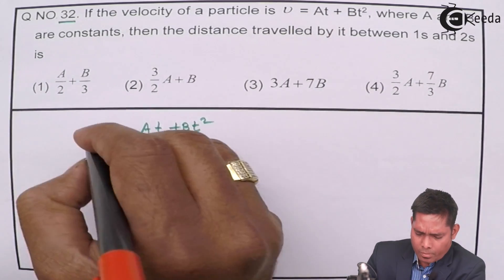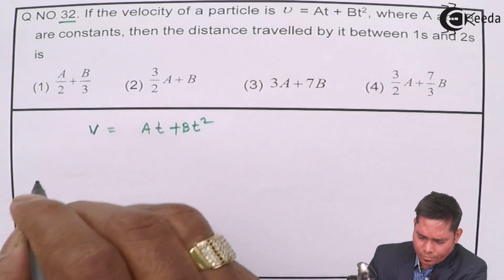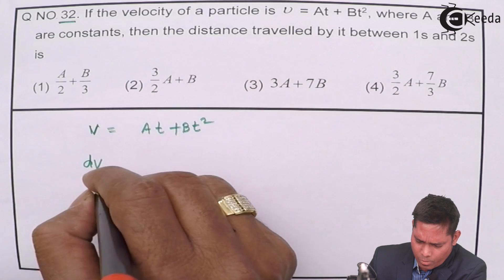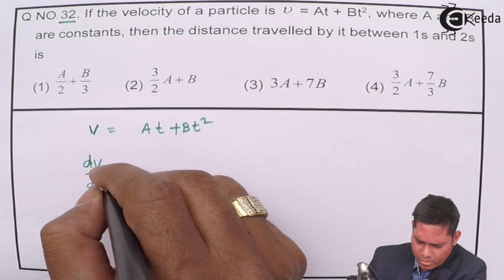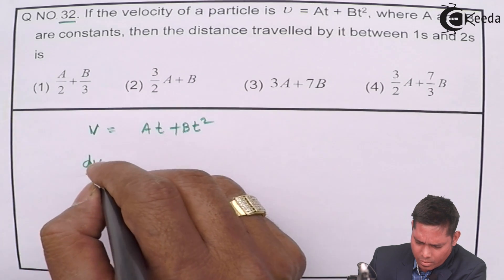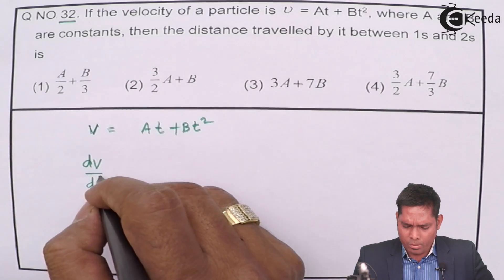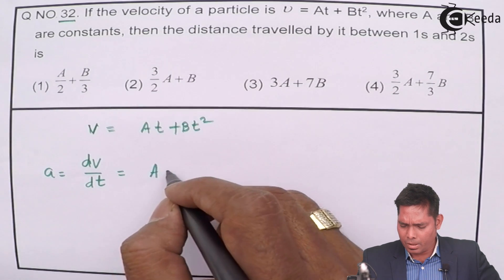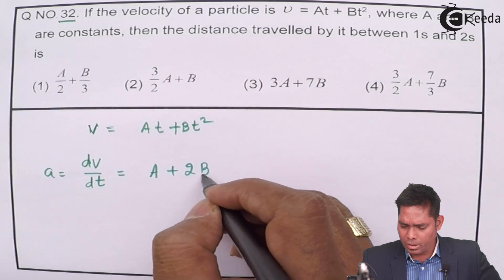If velocity is given, if I differentiate that, I will get dV over dt, which is acceleration. This is obviously not required, but okay, A plus 2BT.